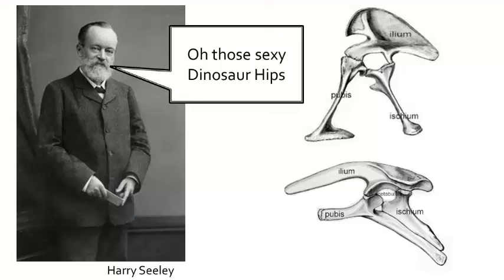Alright, let's see what Seeley saw in the hip bones of dinosaurs. This here is a Saurishian hip. You will note that the pubis bone projects forward so that the three bones form a sort of triangle.